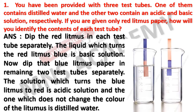You see the two beakers containing the solutions. Blue litmus paper turning to red indicates an acidic solution. Red litmus paper turning to blue indicates a basic solution. The solution which does not change the color of the litmus is distilled water.